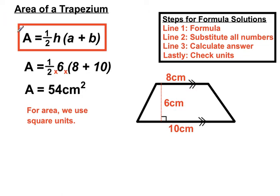So we had a formula for the area of a trapezium. We just plugged in all the numbers, substituted all the numbers directly underneath the right spots, read it off carefully from our diagram, did a bit of calculating, and we're using square units.